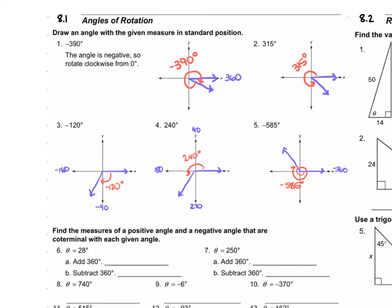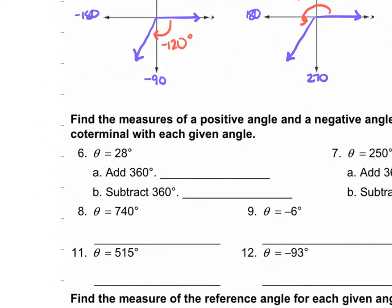For the next section of 8.1, we are finding the measures of a positive angle and a negative angle that are coterminal with each given angle. For number 6, theta is 28 degrees. If we take 28 and add 360, we get 388 degrees. If we subtract 360, we have negative 332 degrees. So those are our two coterminal angles.